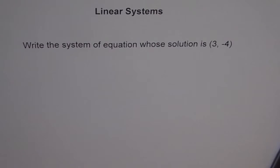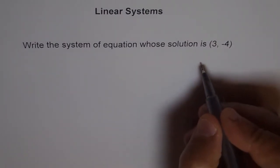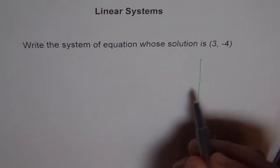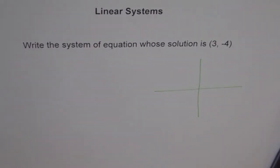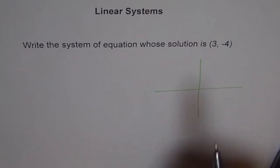Now, there could be many equations, many sets of equations we should say. When we say system of equations, that means more than one. What comes to your mind when you get a choice of giving two lines which could intersect at point (3, -4)?